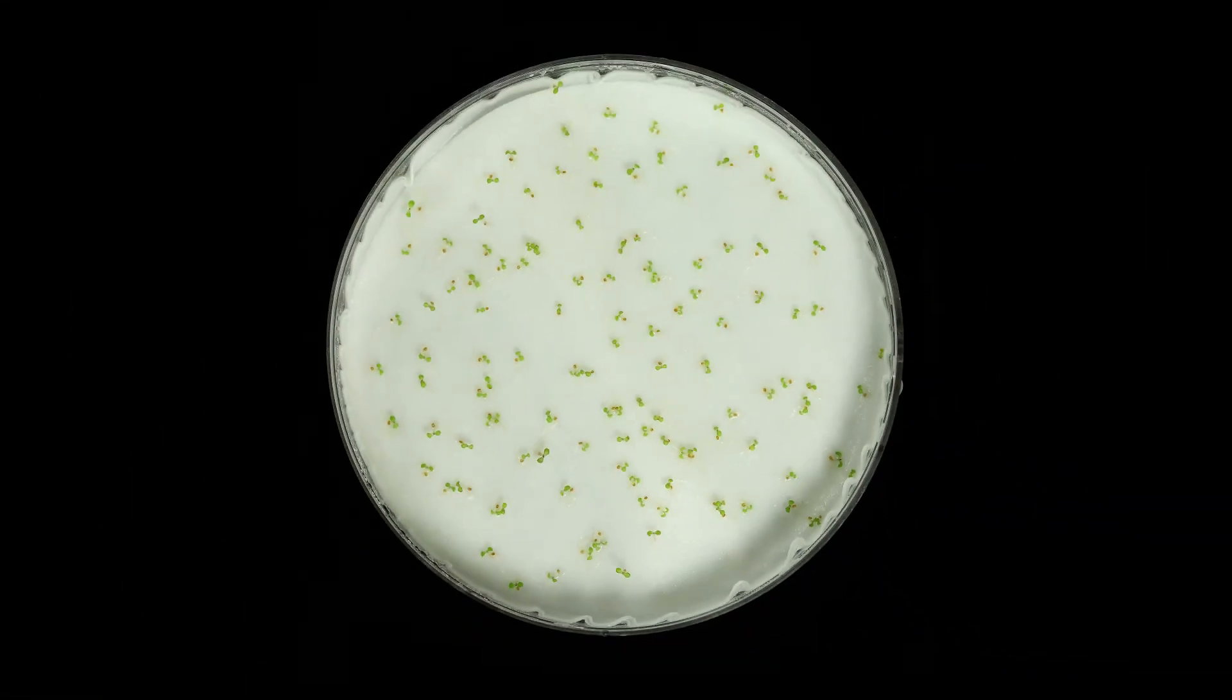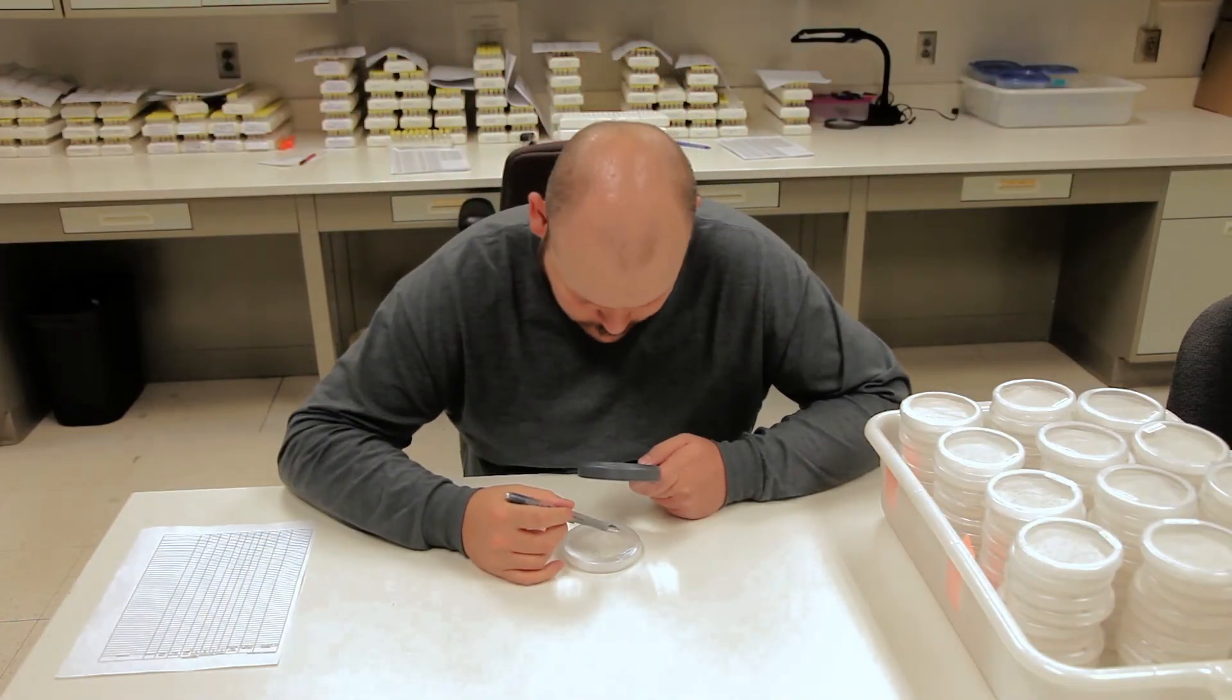After the growth period, calculate the germination percentage by counting the number of germinated seeds versus the number of non-germinated seeds.